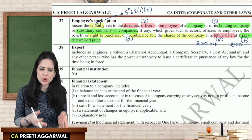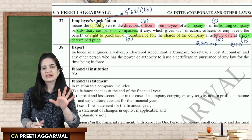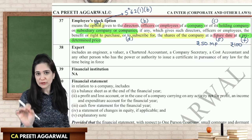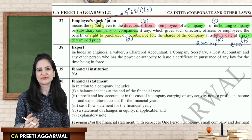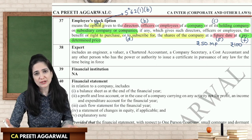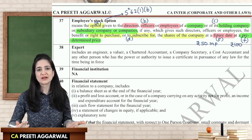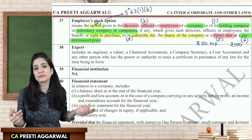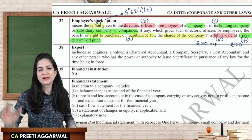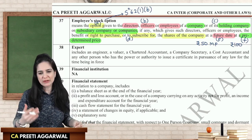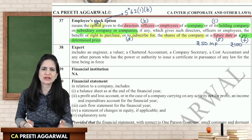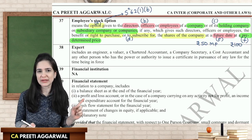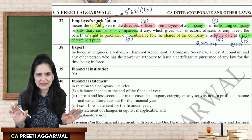Why is ESOP given? This is an employee retention tactic. The company wants to retain employees, so it gives them a carrot: stay for 3 years and we will give you ESOP. For example, you can buy 100 shares after completing 4 years, 200 shares after 5 years. Because the employee wants these ESOPs at a predetermined price — whatever the market price may be — they are encouraged to stay in the organization.